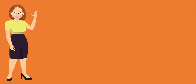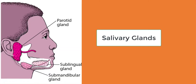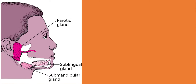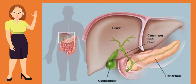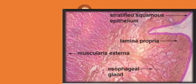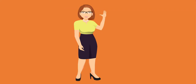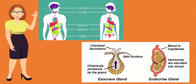The examples of exocrine glands are salivary glands, liver, Brunner's gland, oesophageal glands, etc. That's all about our quick information related to endocrine glands and exocrine glands along with their examples.